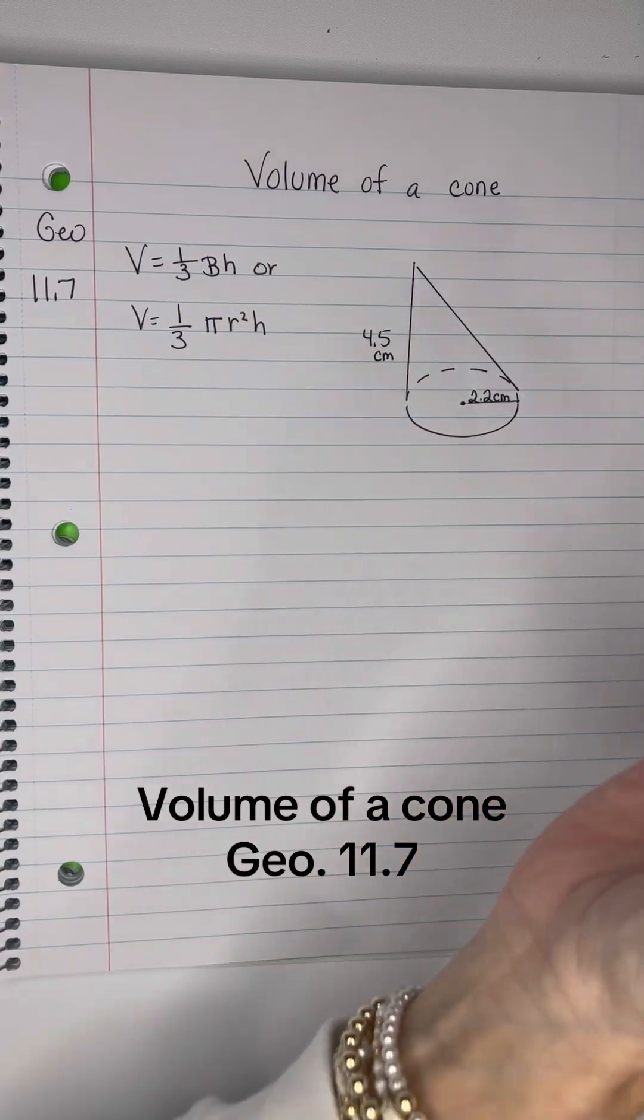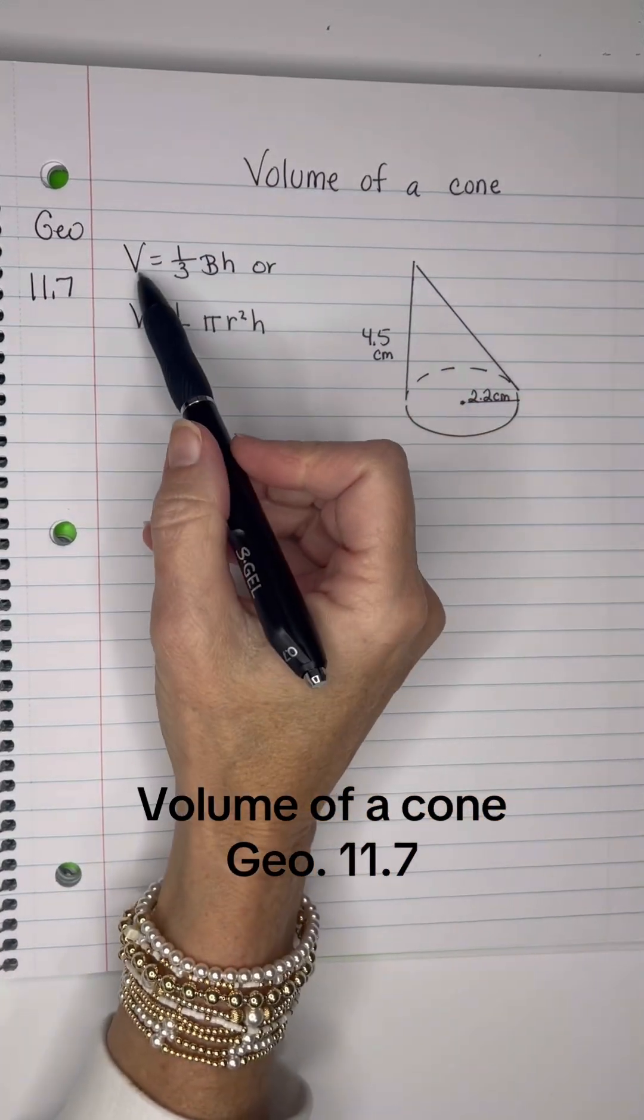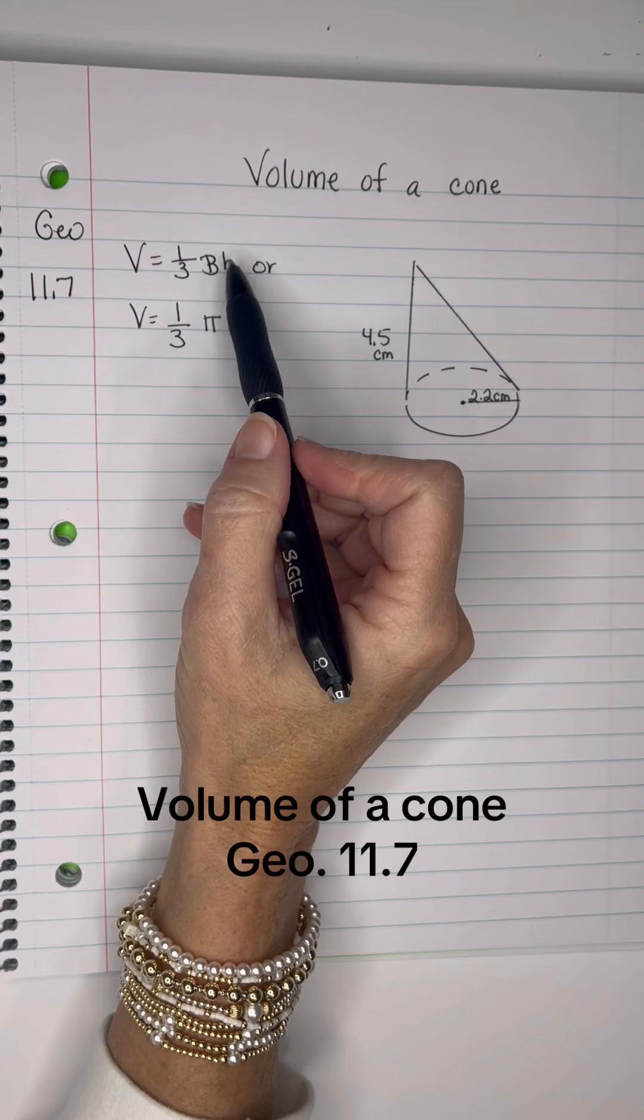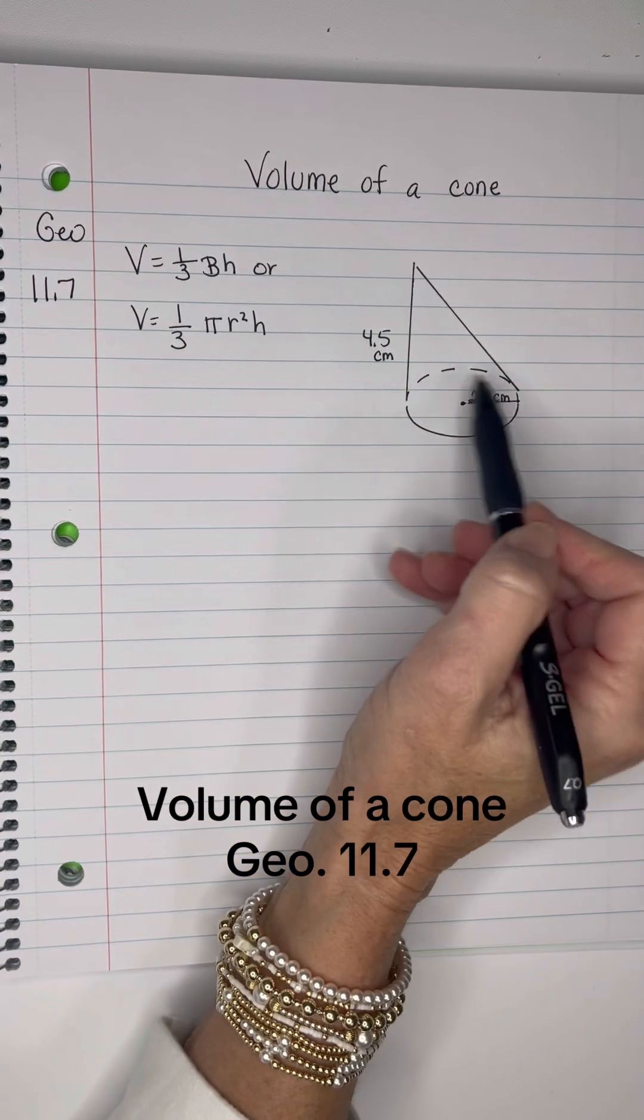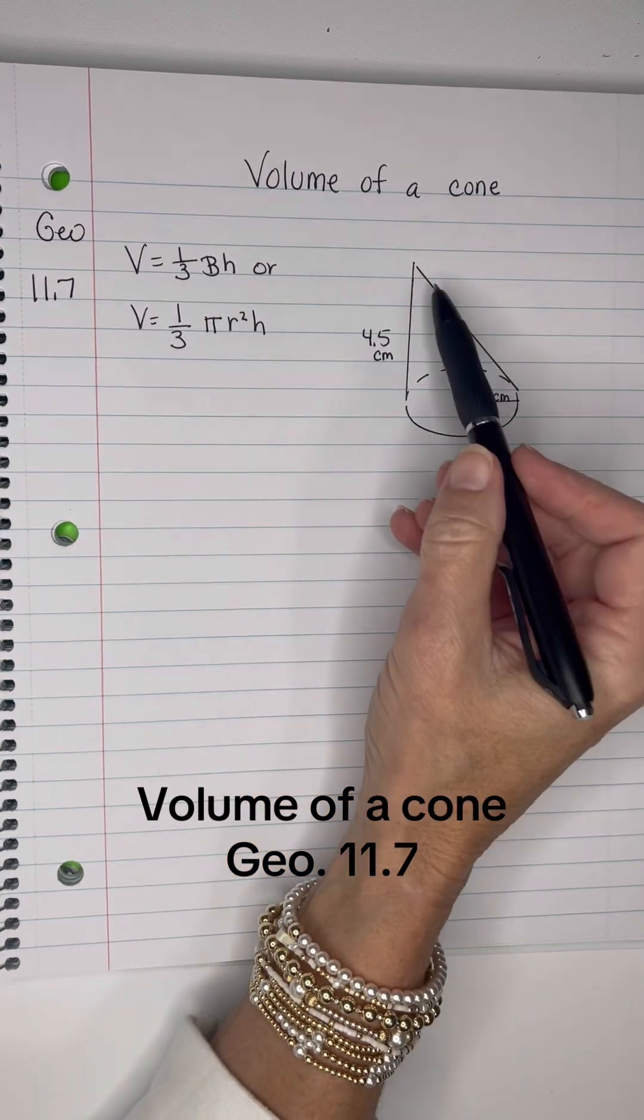Okay, another volume of a cone problem with the formula 1/3 times the base times the height, which is the area of the base—the circle here—times the height of the cone.